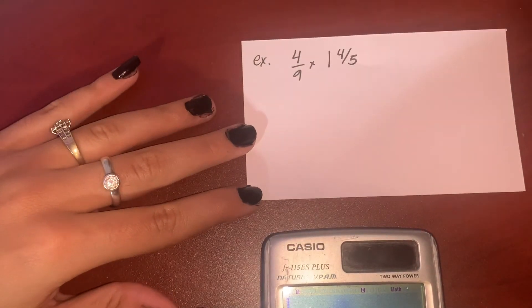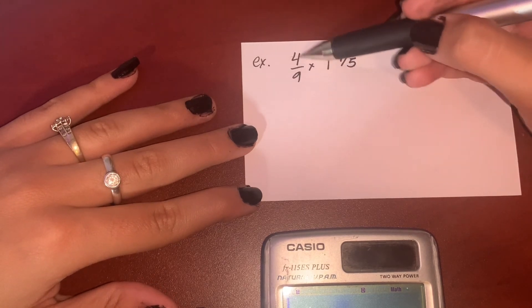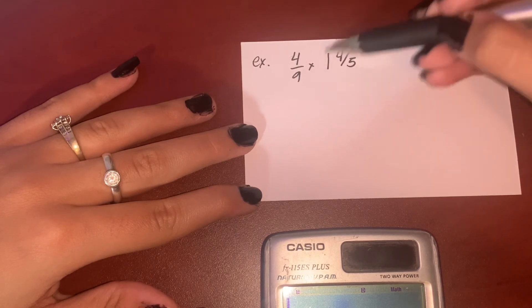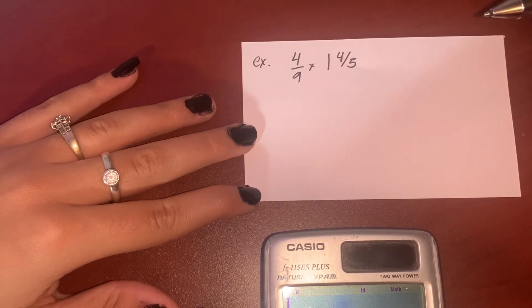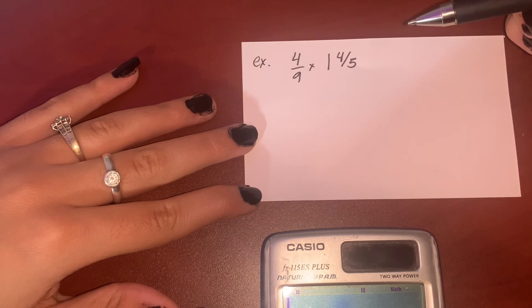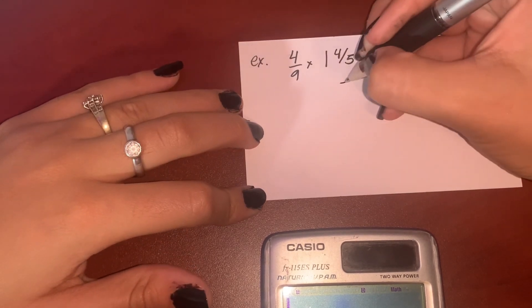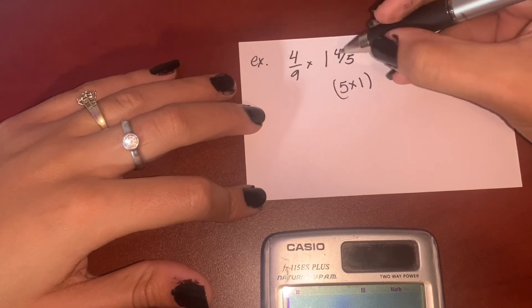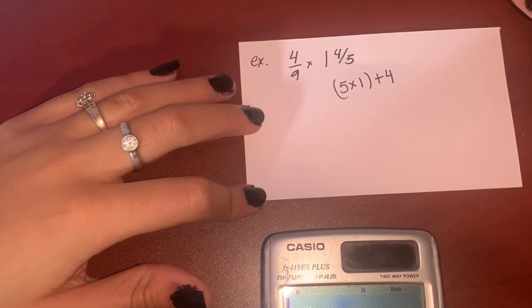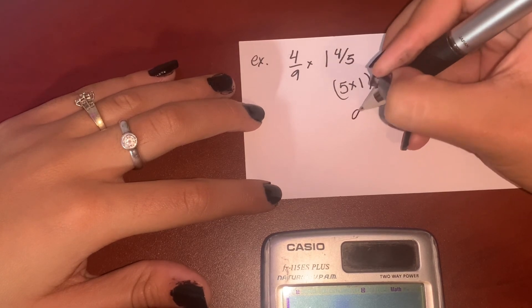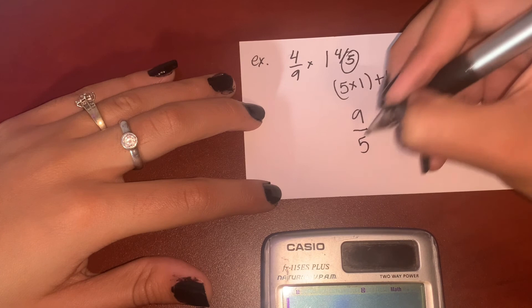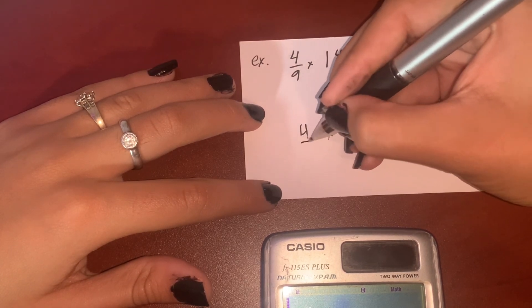One last question to finish this video is a simple fraction multiplied by a mixed fraction. Again, we need this mixed fraction to be a simple fraction in order to multiply it. So 5 multiplied by the bigger one, and then you add the 4 of the numerator. This gives me 9 as my numerator. Denominator is the same, 5. Let me bring this down, 4 over 9.